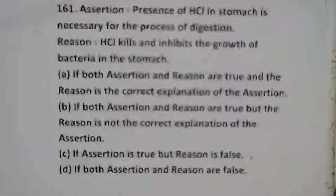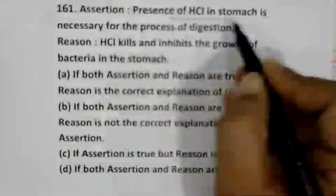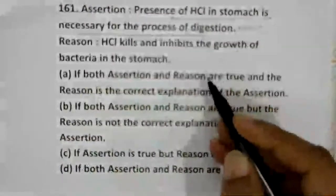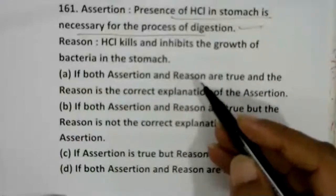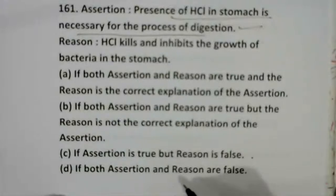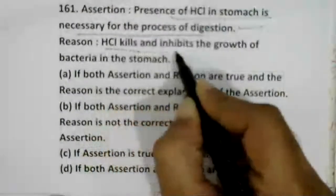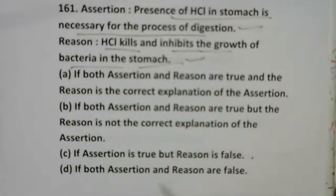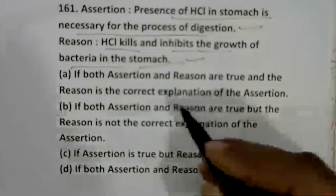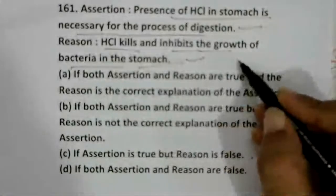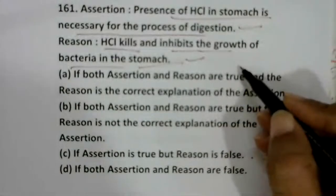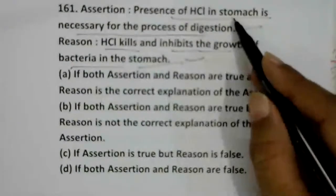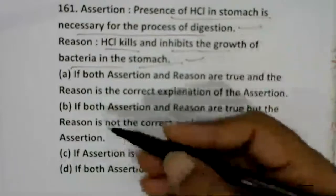Assertion: presence of HCl in the stomach is necessary for digestion — correct. HCl converts pepsinogen into pepsin, which acts on protein molecules for protein digestion. Reason: HCl kills and inhibits the growth of bacteria in the stomach — also correct. HCl kills pathogens and inhibits bacterial growth, aiding defense mechanisms. Both are correct, but the reason is not the correct expression of the assertion — option two.